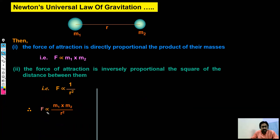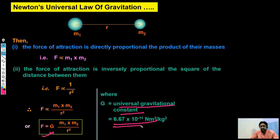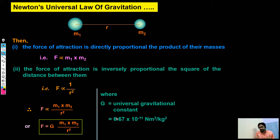After removing the proportional sign, we put a constant denoted by capital G, called the universal gravitational constant. The value of this universal gravitational constant is 6.67 × 10⁻¹¹ Newton meter squared per kilogram squared. So this is all about gravitational force — its mathematical expression, its direction, and lots of examples we have seen in this lecture.